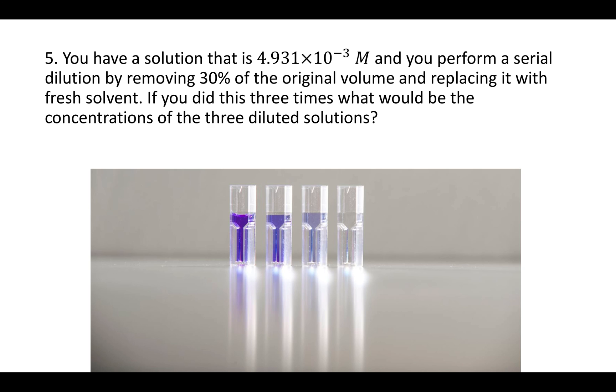So each time the new solution is only going to be 70% as concentrated as the original solution. So you'll take the concentration they give you at the top, here 4.931 times 10 to the negative third, and multiply it by 0.7, that's 70%, 0.7, and that would be the concentration after the first dilution. That would be like this second cuvette here.